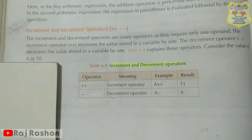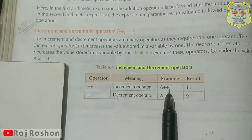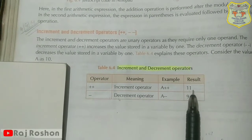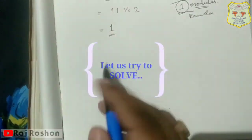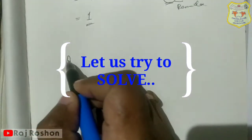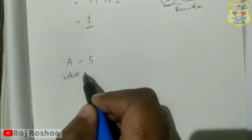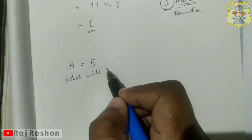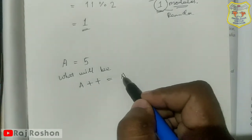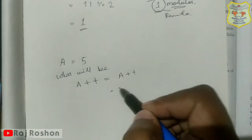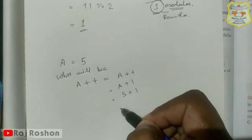Consider a value — here a is given as 10. So if you write a plus plus, that means a plus 1, which becomes 11, and the decrement operator a minus minus means a minus 1. Suppose I take a value a equal to 5, then a plus plus equals a plus 1, and since a is 5, 5 plus 1 gives 6.